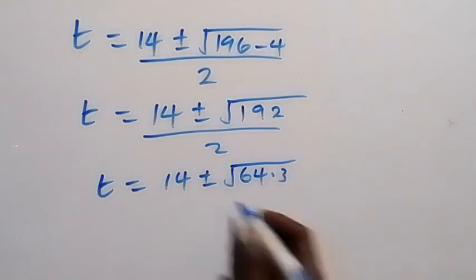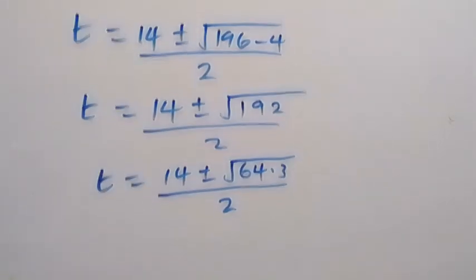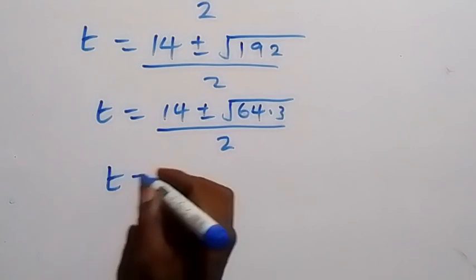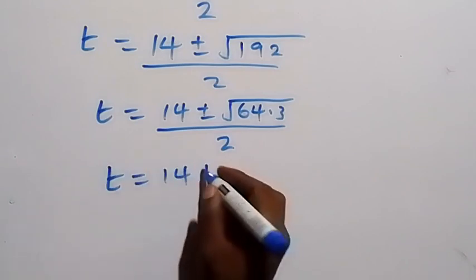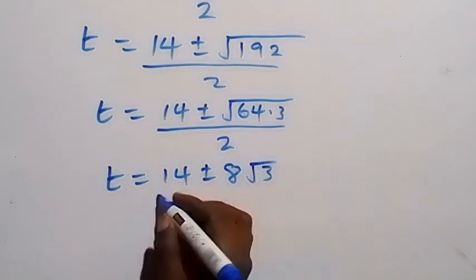Then square root of 64, then square root of 3, then divide by 2. Square root of 64 is 8. And we have t equals 14 plus or minus 8 root 3 over 2.